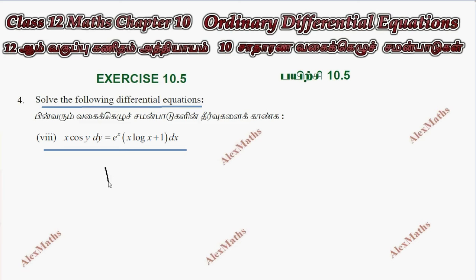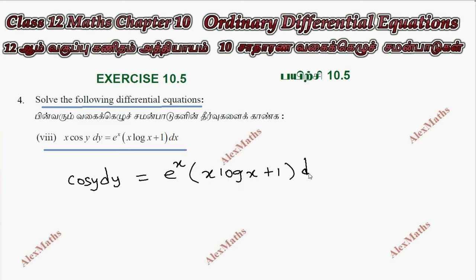So dy equals x times y. We have cos y dy on one side. Separating variables: cos y dy divided by x — the variables are now separate.